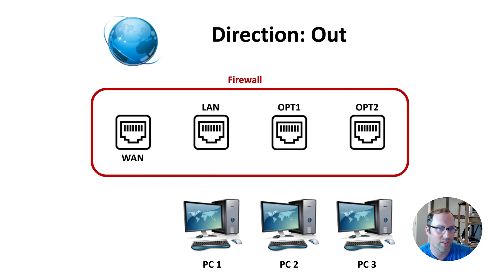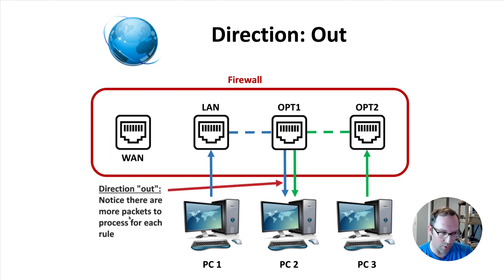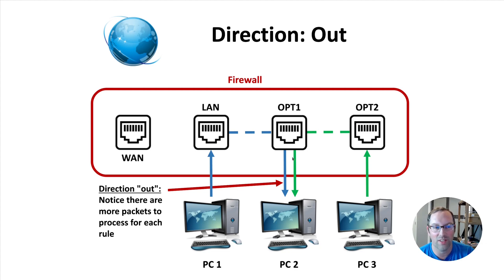With direction out, let's say we have the same data transfer from PC one to PC two, and also a transfer from PC three to PC two coming from the Optional Two network. So now we have two data streams coming into PC two. If we look at direction out, notice there are more packets to process with the same rule. Before, the rule on the LAN interface only processed traffic from LAN — just one PC. But a direction out rule on Optional One now has more data packets to process because another PC from another network is also coming out of Optional One — twice as much data.